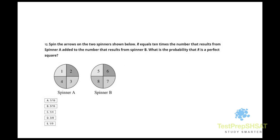Spin the arrows on the two spinners shown below. R equals 10 times the number that results from spinner A added to the number that results from spinner B. What is the probability that R is a perfect square?